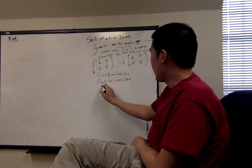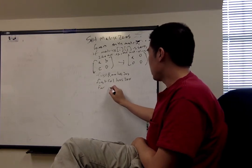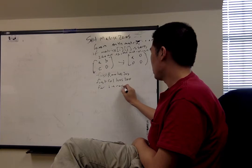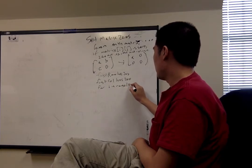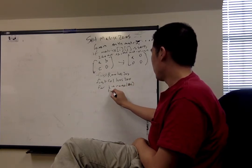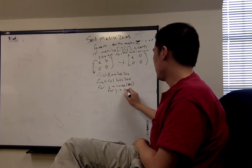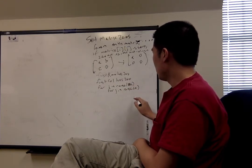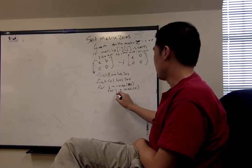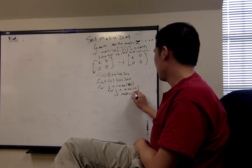And then we're going to iterate through the matrix. So for i in range(m), for j in range(n), what we want to do is if matrix[i][j] is zero,